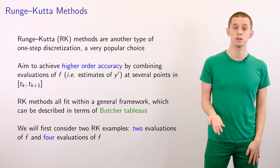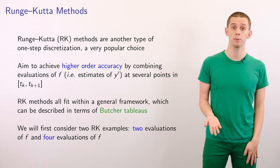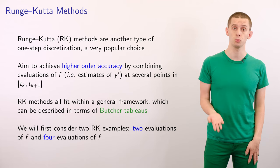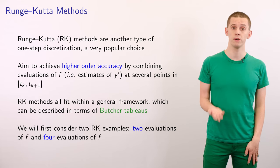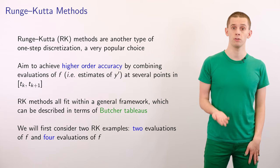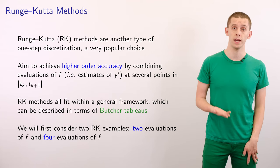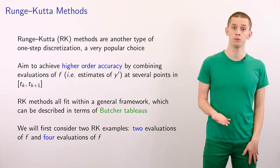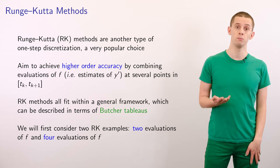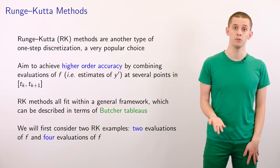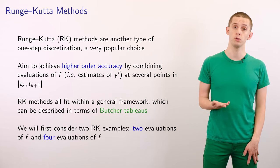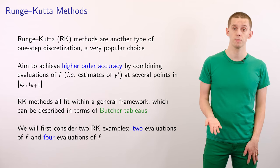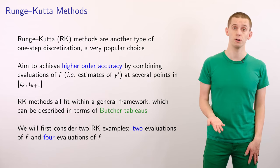Runge-Kutta methods are another type of one-step discretization and are a very popular choice. When we're taking a time step from t_k to t_{k+1}, the aim is that we'll make several evaluations of our right-hand side function f and combine them in a way that will achieve higher order accuracy. We'll first look at two different Runge-Kutta examples: the case when we make two evaluations of f and then the case when we make four evaluations of f.